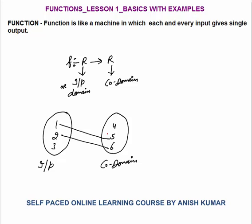Is this a function? 1 is the input, output is 5. 2 is the input, output is 6. That is how the input and co-domain are related. This is an example I am taking. Now, is this a function? No, this is not a function. Because the definition of function is that each and every input should have exactly one output or single output. In this case, the input 3 does not have any output. So, this is not a function.